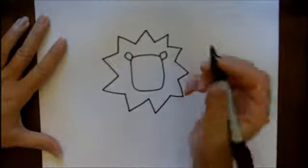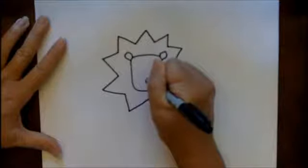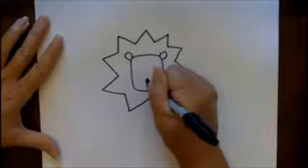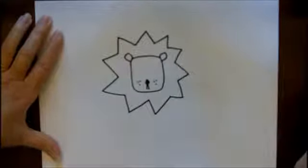Now for the inside of his face we're going to put a nose towards the bottom. You can color that in if you like, with two lines coming down from his nose that will be his mouth and some little dots for where his whiskers come out.